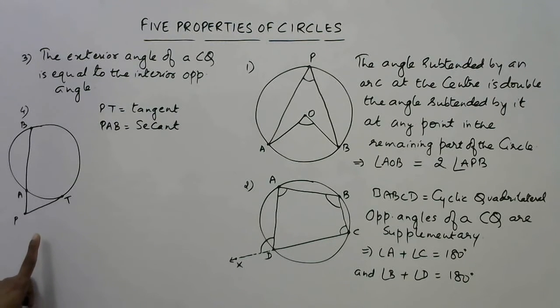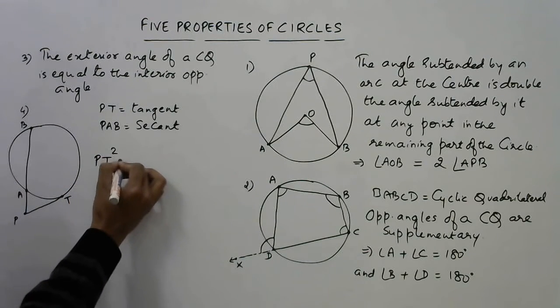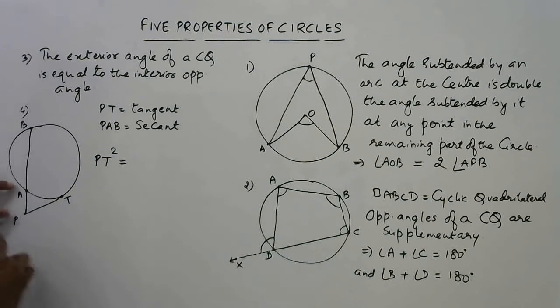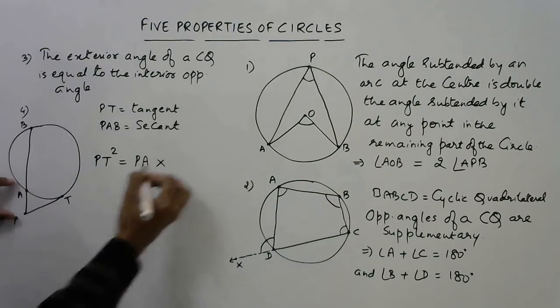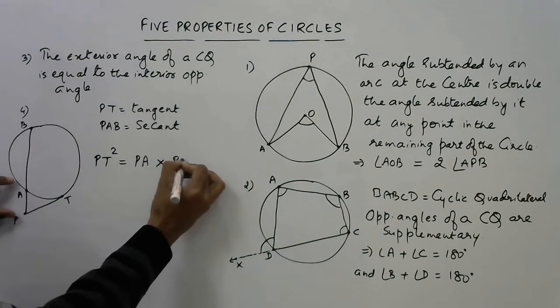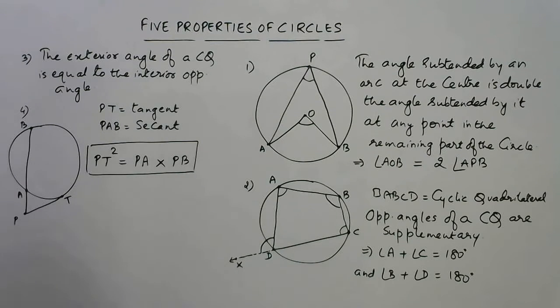There is a very important property associated with one tangent and one secant. The square of the tangent is always equal to the product of the distances from this point to the points where the secant contacts the circle. So PT² = PA × PB. Another very important property for competitions.